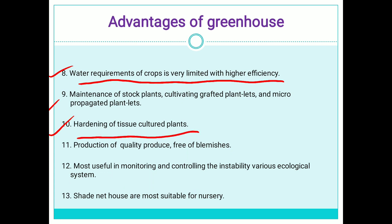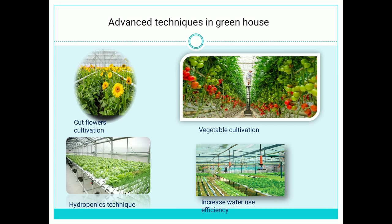Shade nets or polyhouses are used for hardening of tissue culture plants. Plants prepared in the tissue culture lab are brought into shade nets for hardening for a few days. There is production of quality produce free of blemishes. Shade net houses are most suitable for nursery raising. Cut flower cultivation such as gerbera, rose, and other cut flowers of 35 cm or more stem length can also be produced.